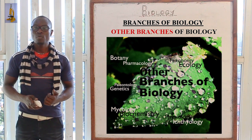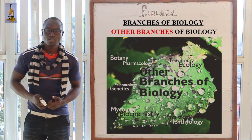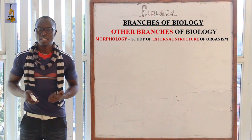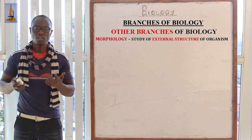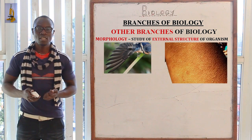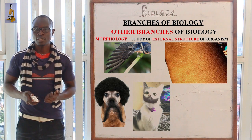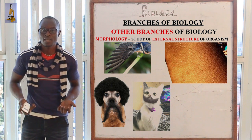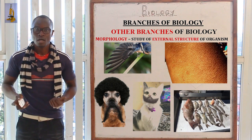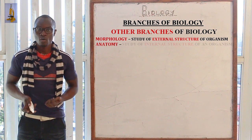Now let's look at the other branches of biology — there are very many, and we'll look at a few. The first is morphology, which is the study of the external structure of living organisms. Examples include feathers in birds, skin in humans, hair in dogs, fur in cats, and scales in fish.